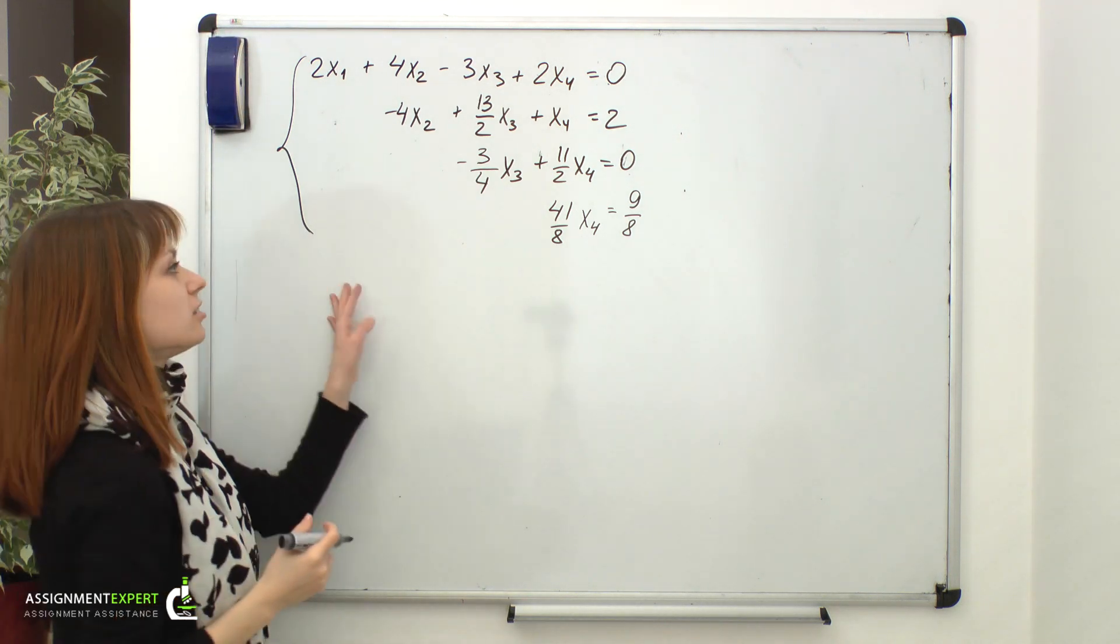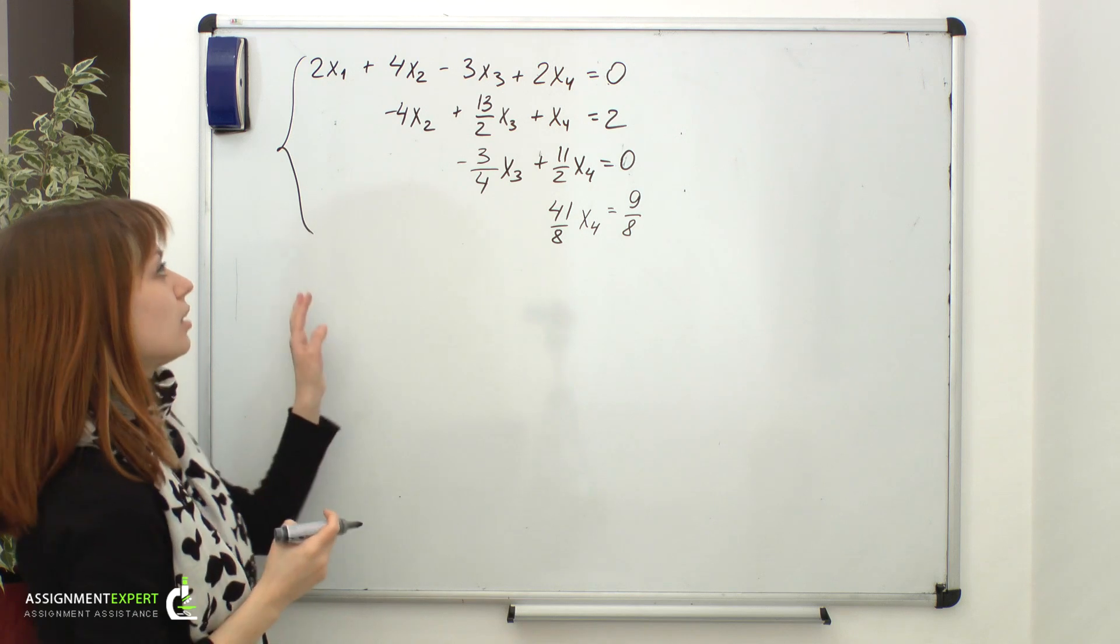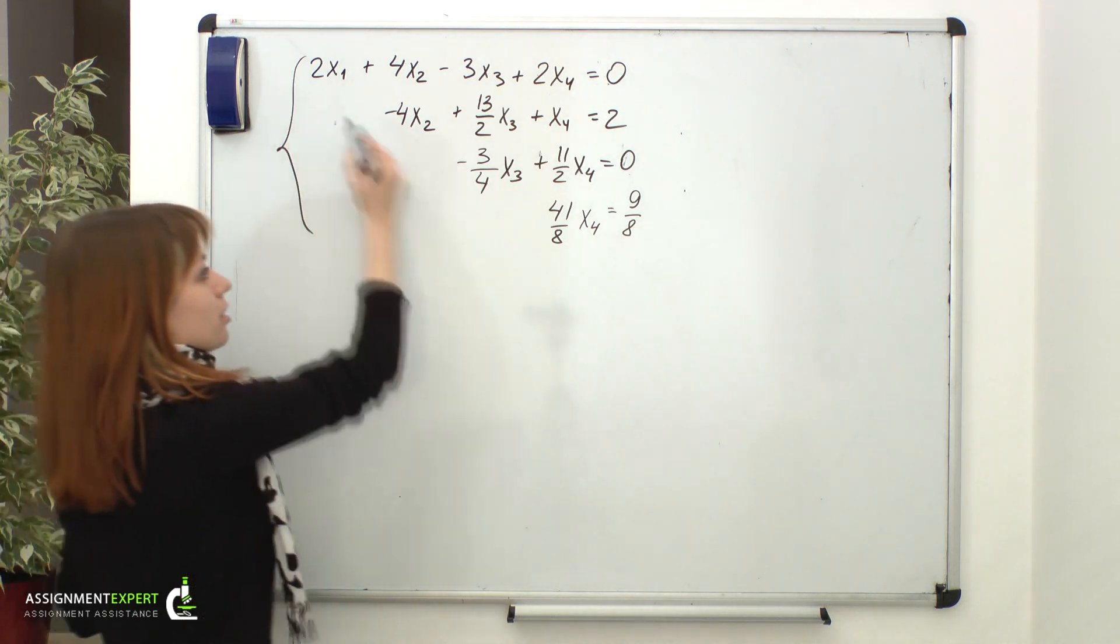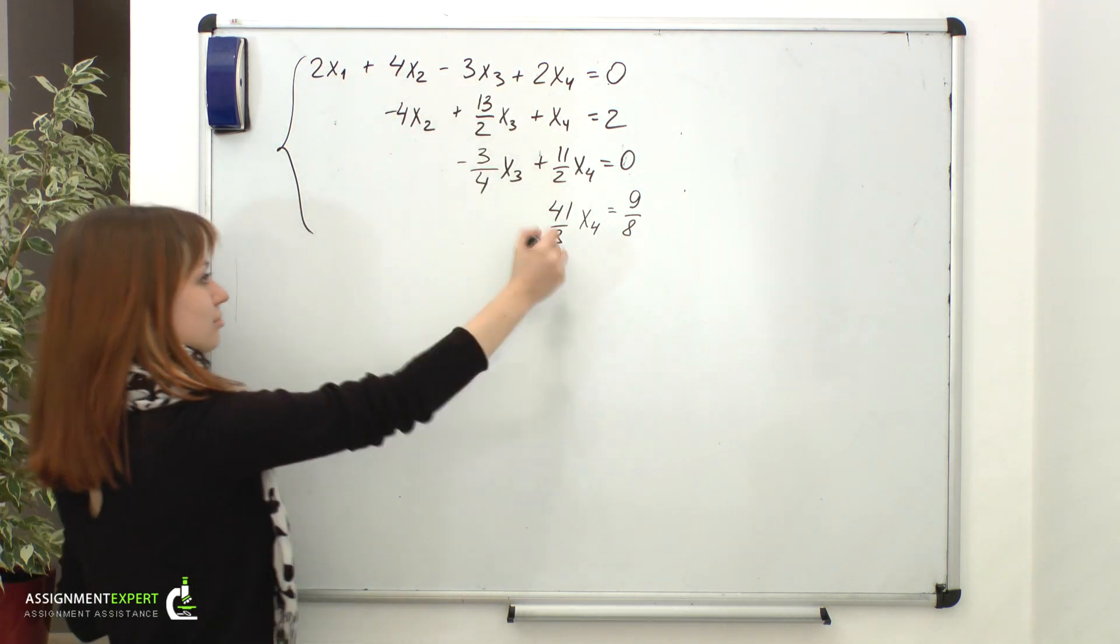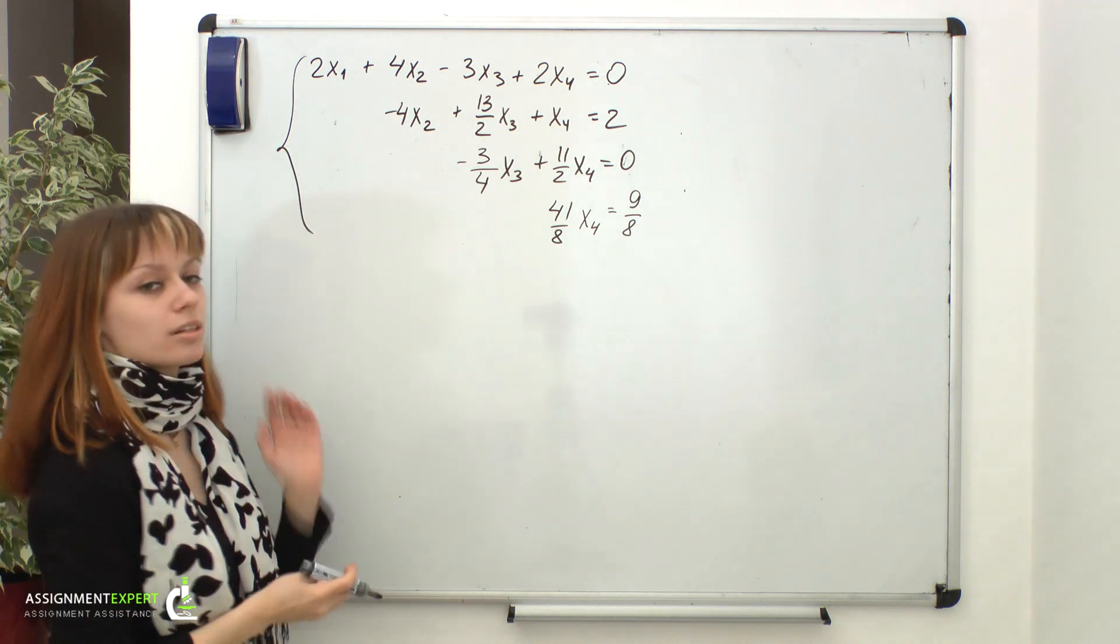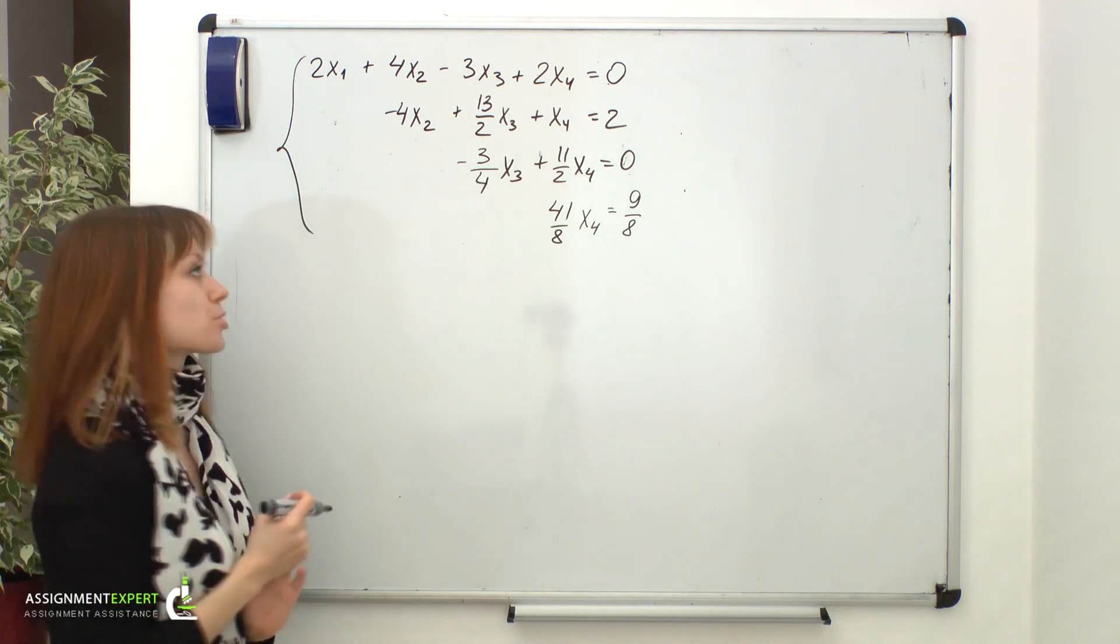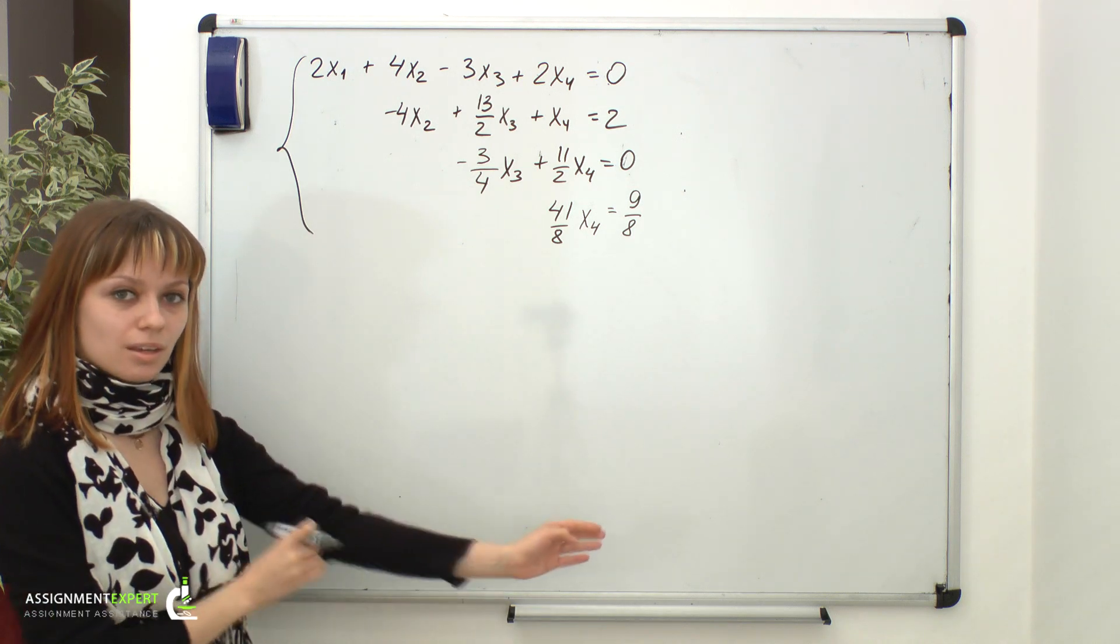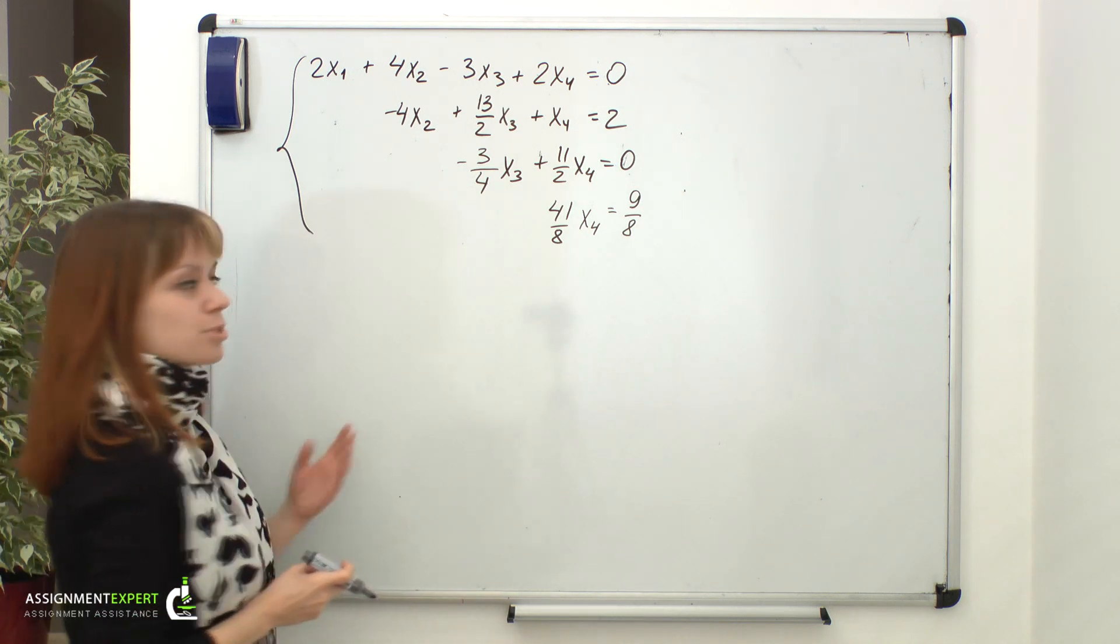This is our final equivalent system, and it is in the upper triangular form. Finding unknowns from the system in triangular form is called the reverse course of Gaussian method. And it's rather easy to see how to proceed from this point.